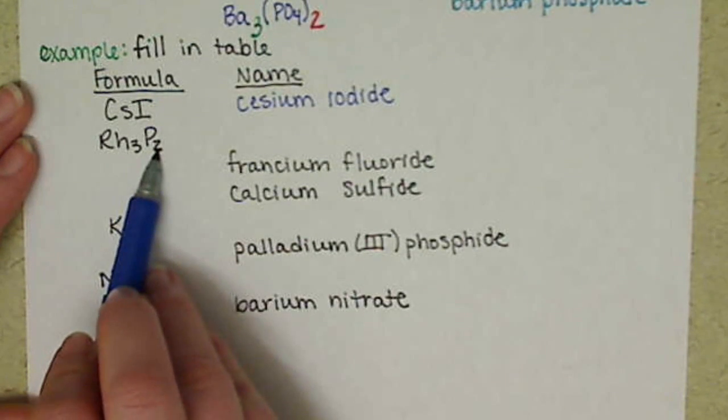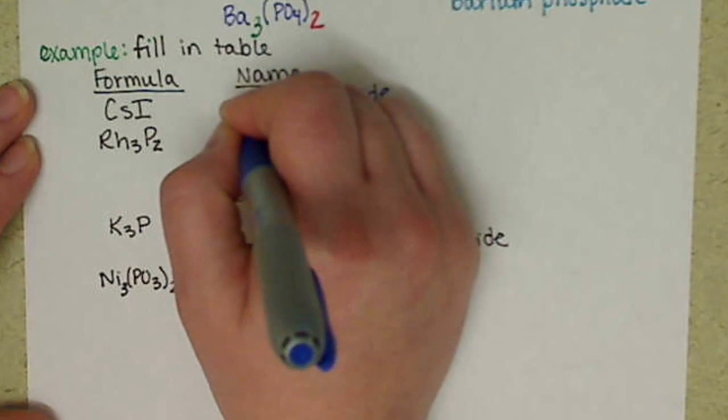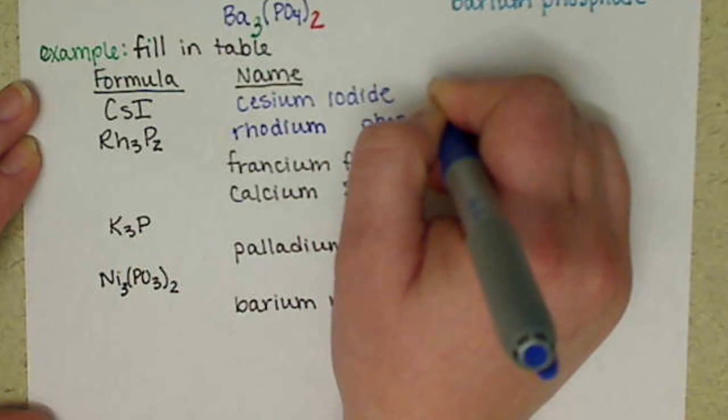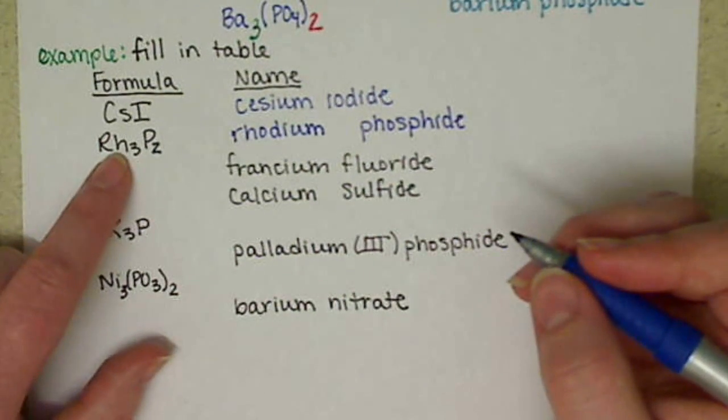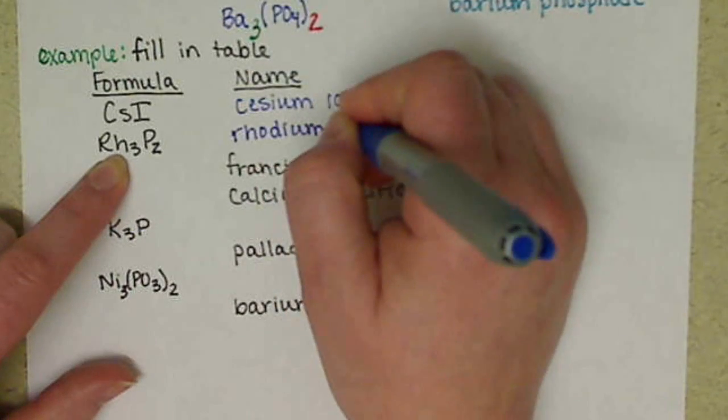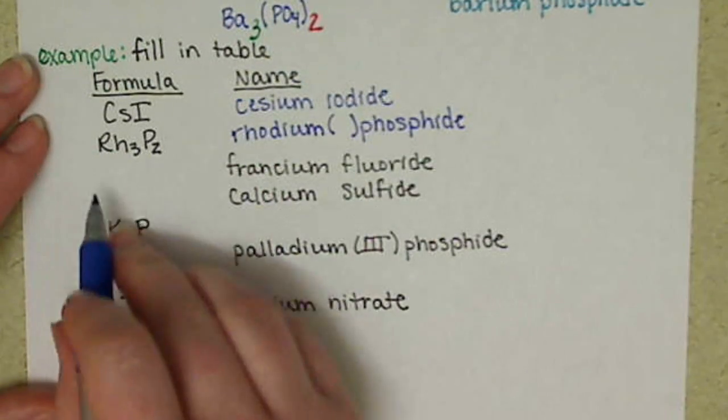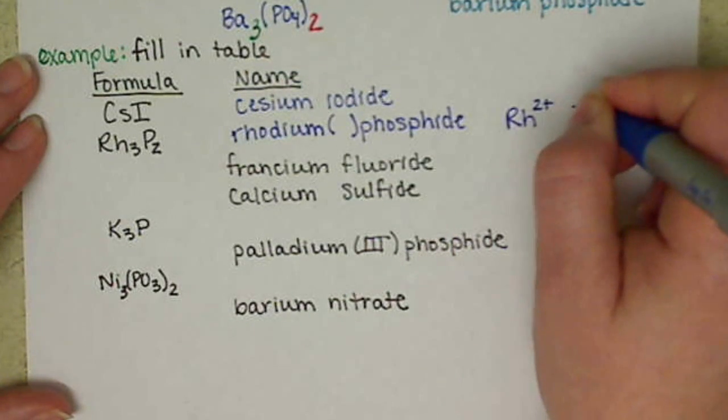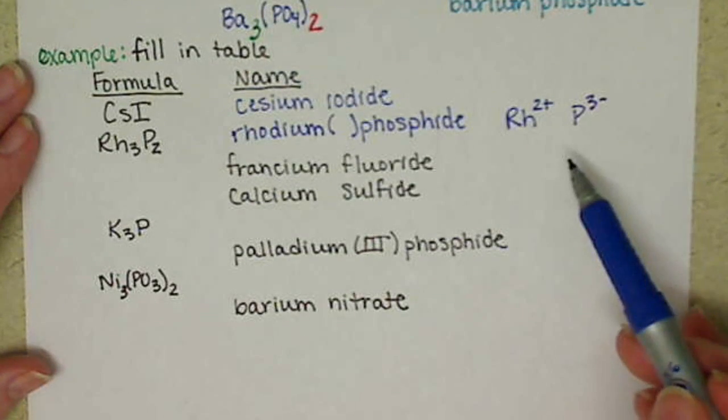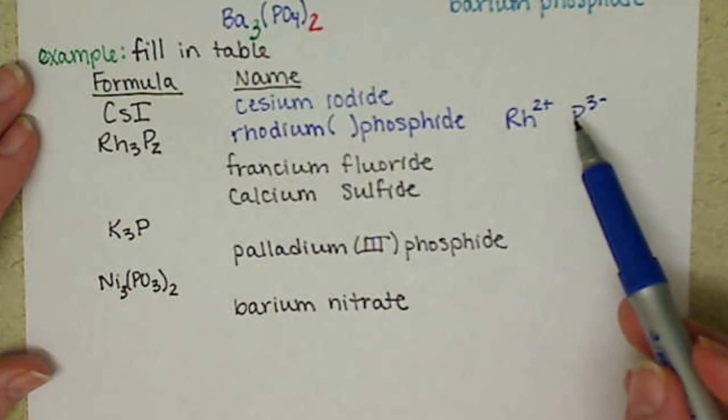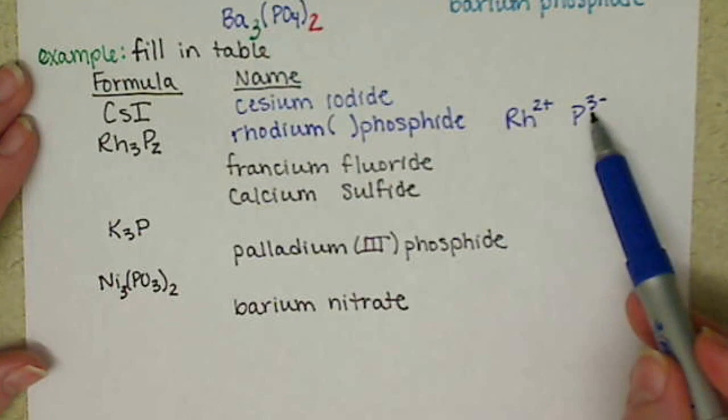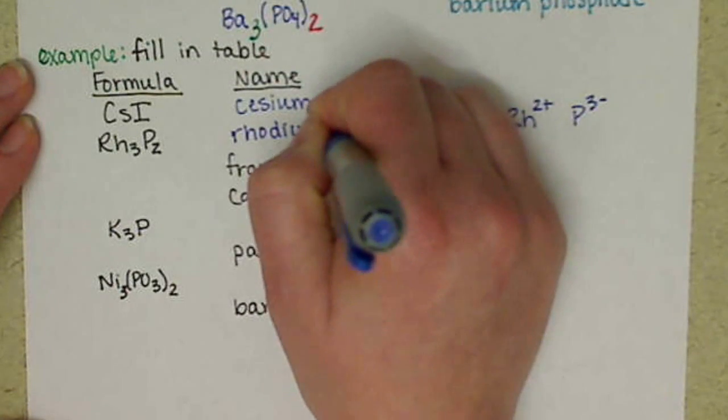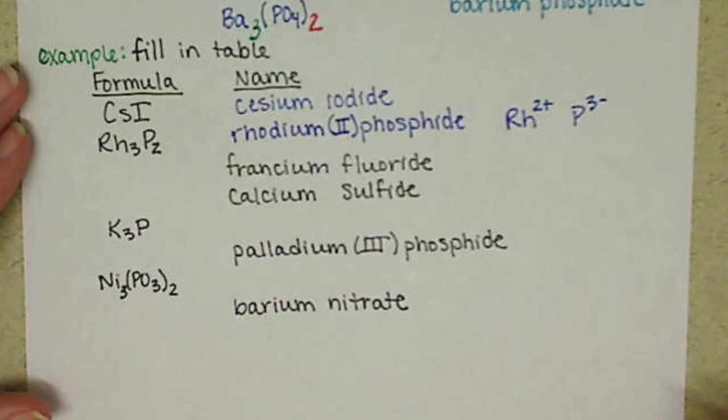We have Rh3P2, so our basic name here, we have rhodium and phosphide. But rhodium is a transition metal, so we need to have Roman numerals there. If I do my cross charge, my rhodium will have a 2+, phosphorus has a 3-. Phosphorus should have a 3-, it's in group 5A, it needs three more electrons, so it'll have a 3- charge, which means that my rhodium has a 2+ charge. My final name is rhodium(II) phosphide.